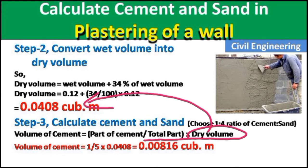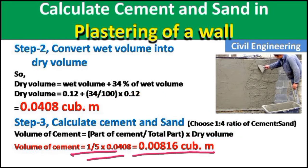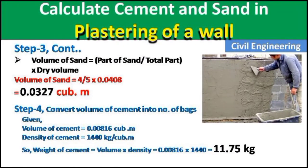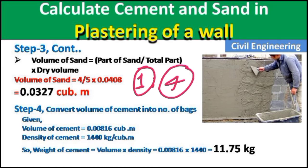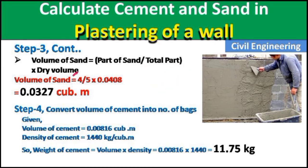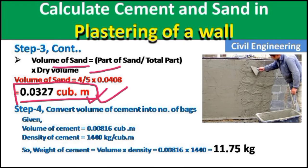Using the dry volume of 0.0408 cubic meters, volume of cement = (1/5) × 0.0408 = 0.00816 cubic meters. For the volume of sand, we use: (part of sand / total parts) × dry volume = (4/5) × 0.0408 = 0.0327 cubic meters. So we now have both the volume of cement and volume of sand.